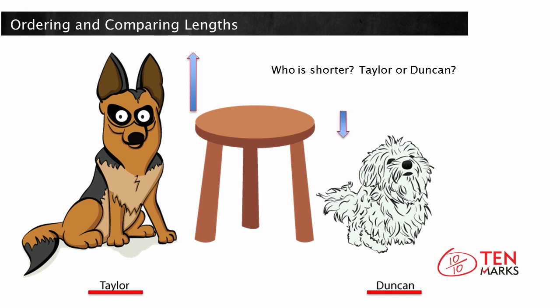Duncan is shorter than the stool, and Taylor is taller than the stool. So Duncan is shorter than Taylor.